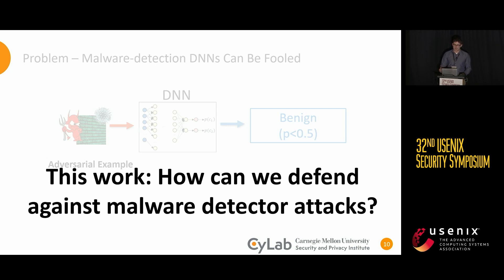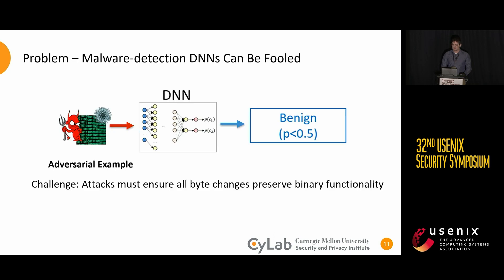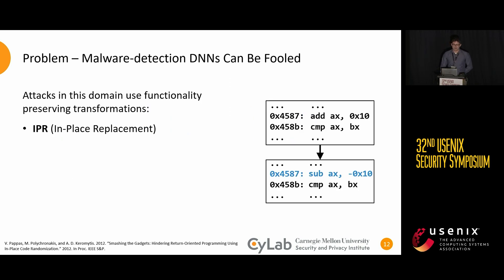Creating an adversarial example in the malware domain has its own unique constraints compared to the image domain. Changes made to a binary must preserve the same functionality — if you change the wrong bytes, the binary could crash, be invalid, or no longer be malware. The first attack we'll discuss is called IPR, or in-place replacement, where compiled instructions are manipulated so the end result is the same but the bytes are different — for example, changing an add six instruction to a subtract negative six instruction. These attacks work on around 30% of binaries.